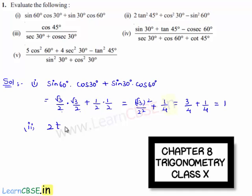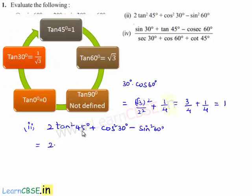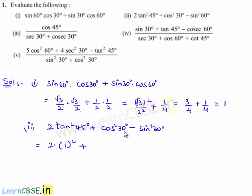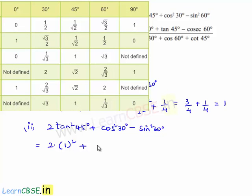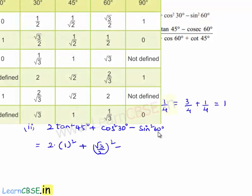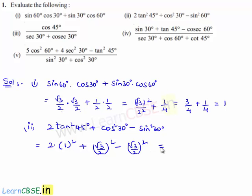Moving on to the second bit: the question is 2tan²45° + cos²30° - sin²60°. This equals 2 × (tan 45°)² + (cos 30°)² - (sin 60°)². We know tan 45° = 1, so 1² = 1; cos 30° = √3/2 and sin 60° = √3/2. So (√3/2)² and (√3/2)² cancel, and 2 × 1² = 2.